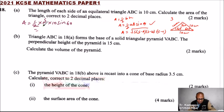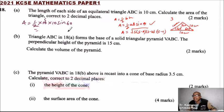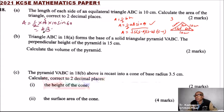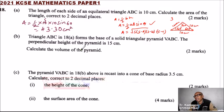That is 5 multiplied by 10 multiplied by sine of 60. My calculator gives me 43.3012. Because we are told to give two decimal places, we look at the third decimal which is 1, so we round down. The area is 43.30 centimeters squared.